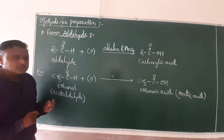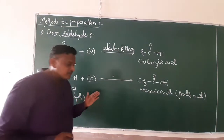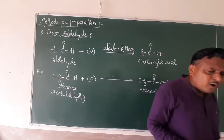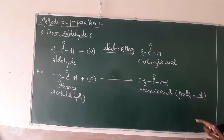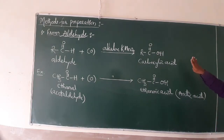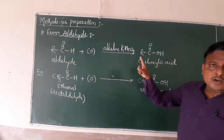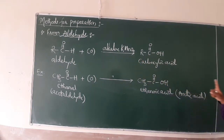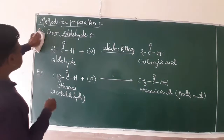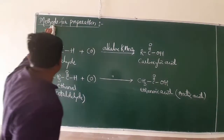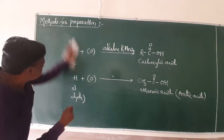These are two simple oxidation reactions — from alcohol and from aldehyde — for the preparation of carboxylic acids. These are straightforward reactions, similar to those seen in the alcohol chapter. Now we move on to the next important method in our syllabus: preparation from alkylbenzenes.